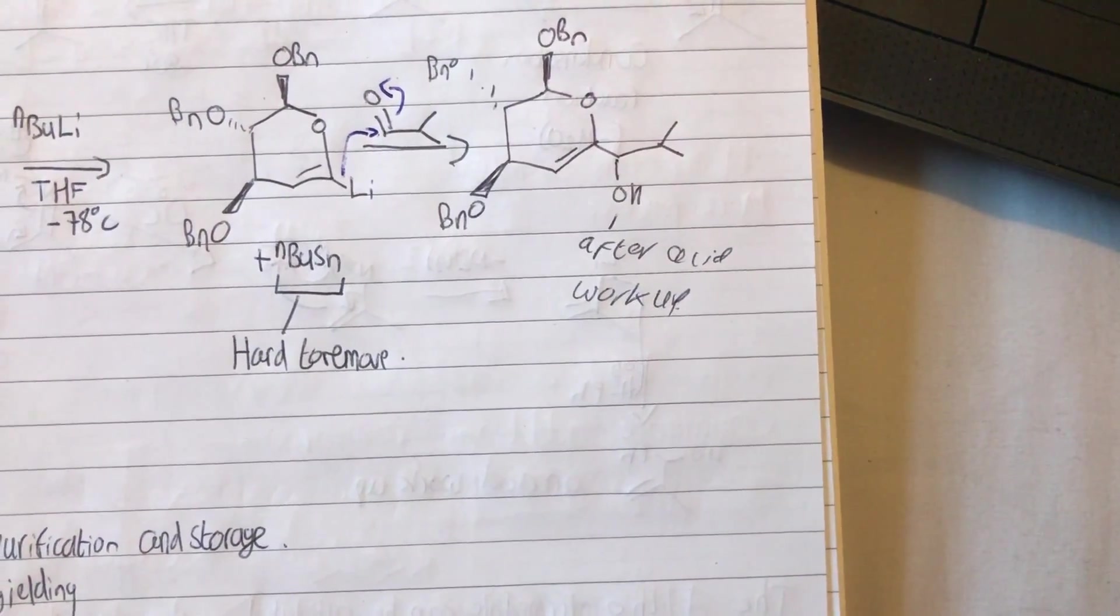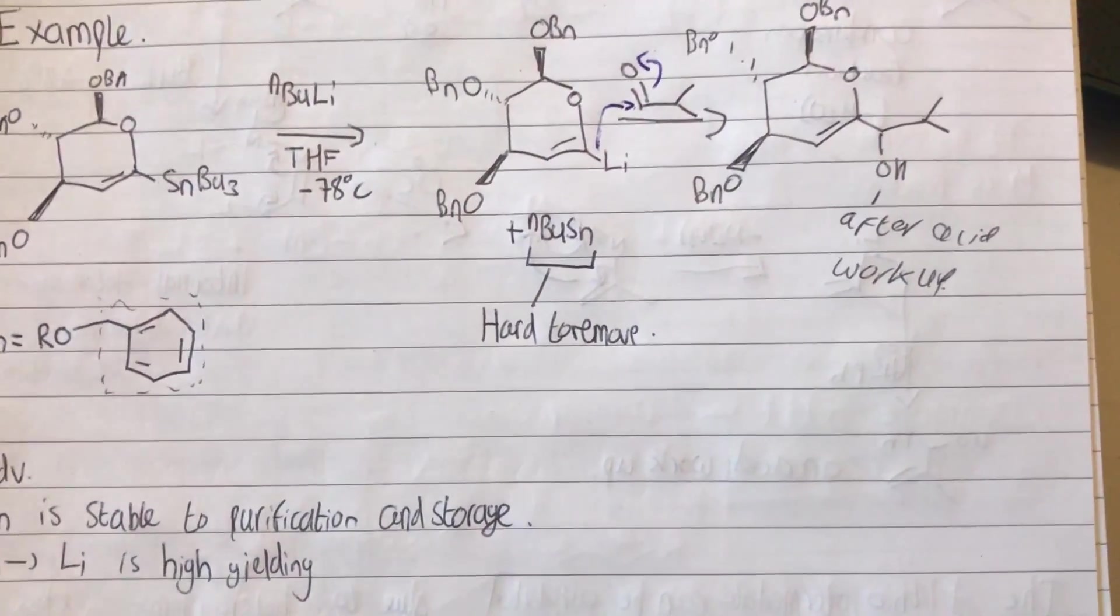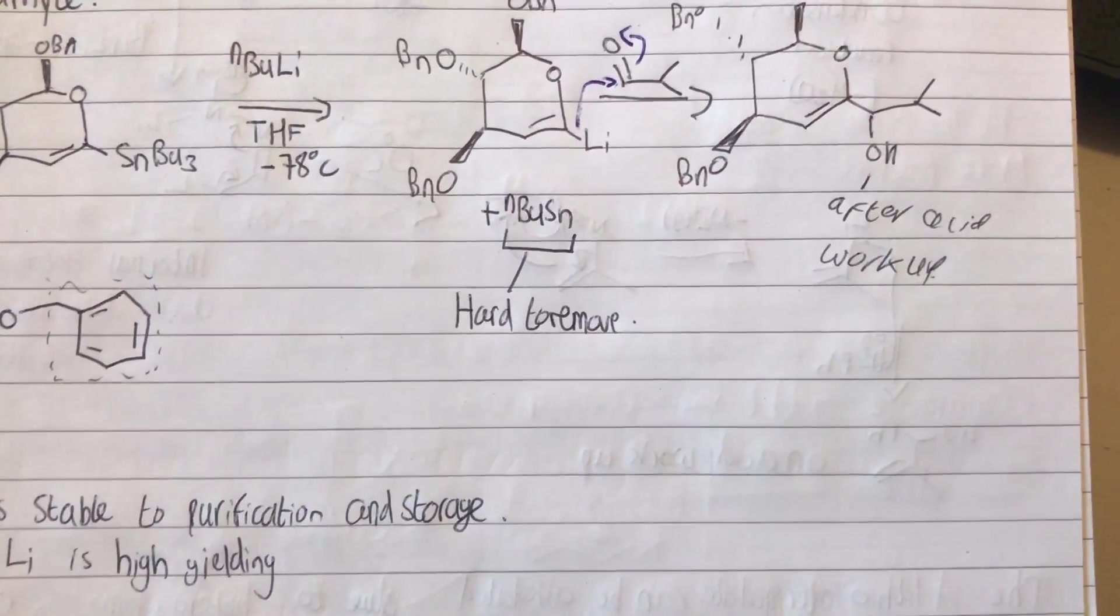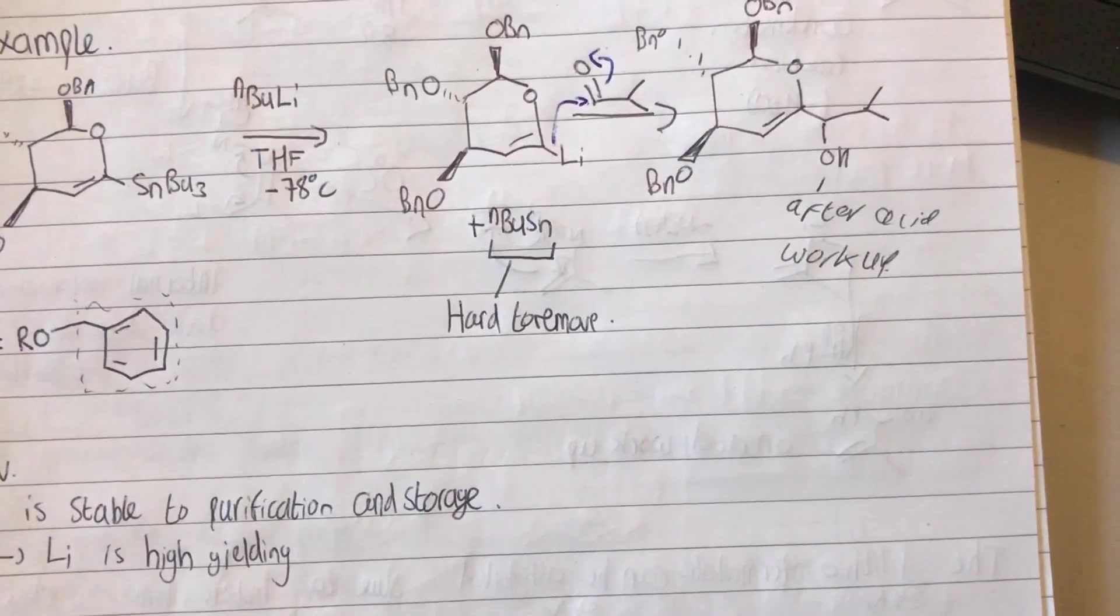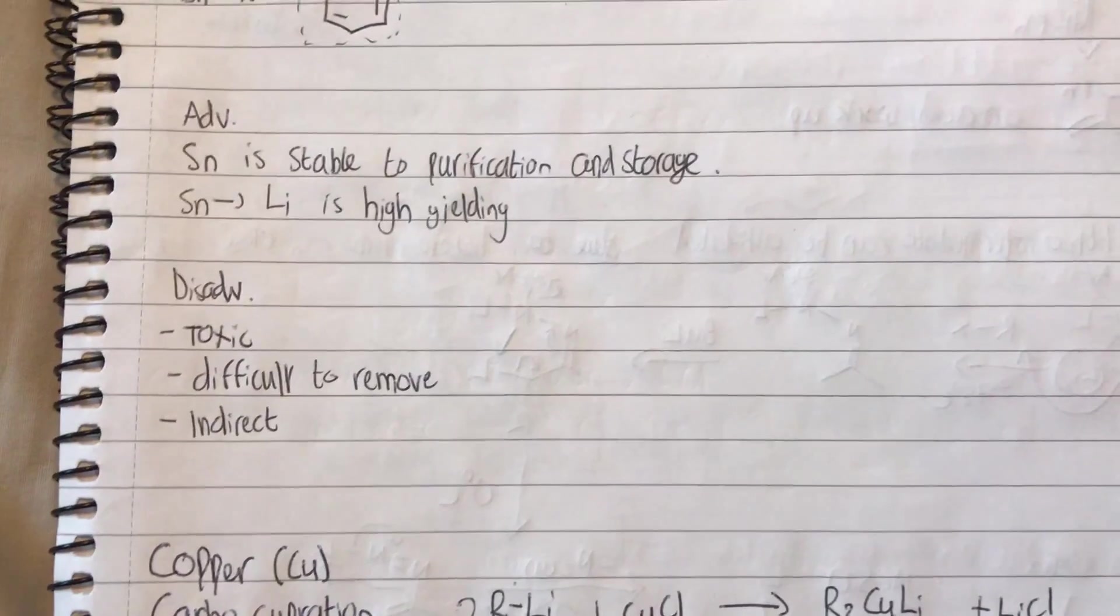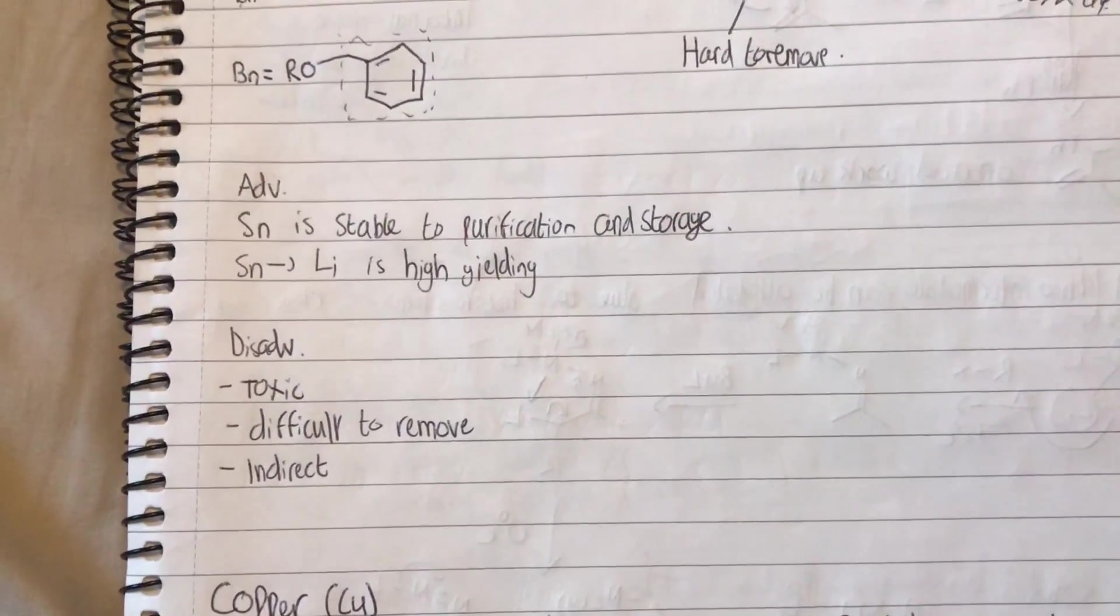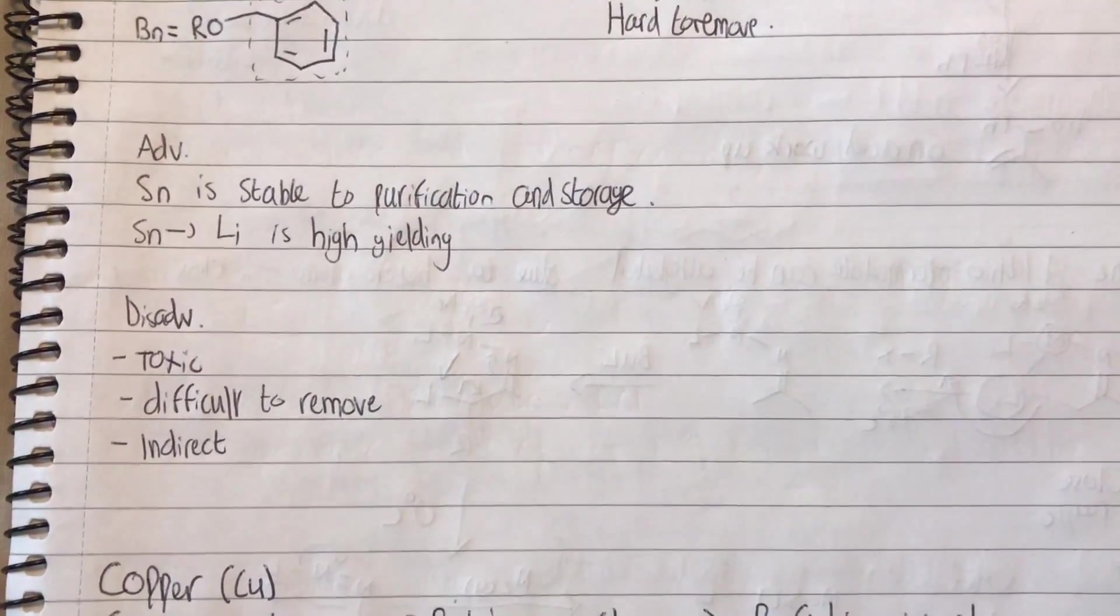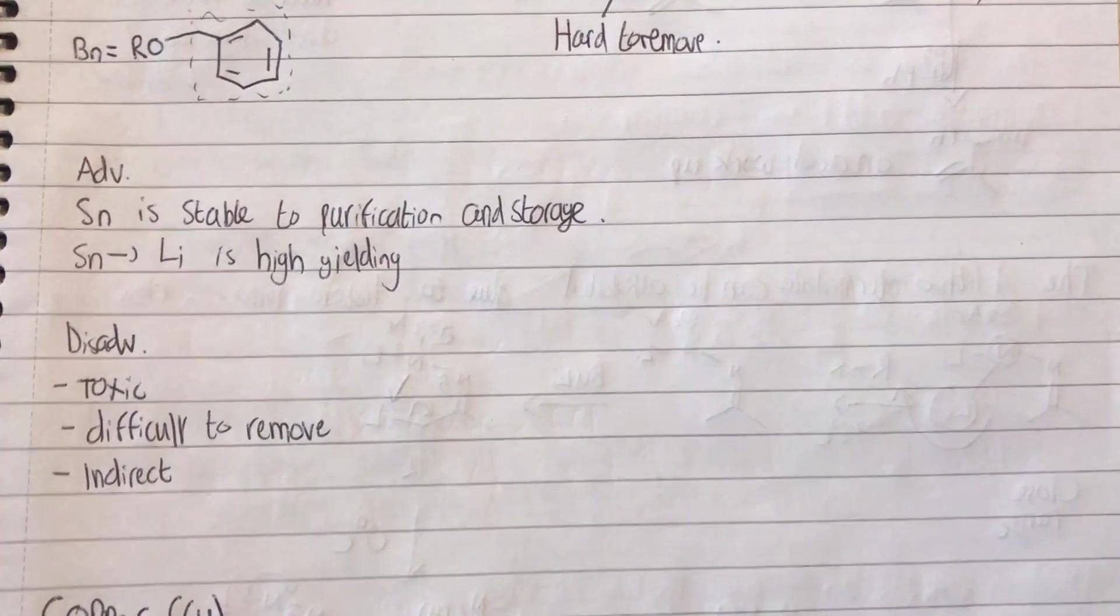The side product to our first step is forming—like I said we're going to use tertiary butyl lithium—our tertiary butyl tin, and this is hard to remove. There are some advantages and disadvantages of using this over halogen-to-lithium exchange. The advantages: the tin is stable to purification and storage, and the lithium is high yielding compared to halogen-to-lithium exchange. A disadvantage is that the tin is toxic, difficult to remove, and is indirect as well.